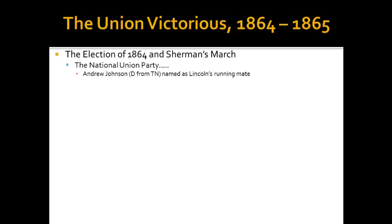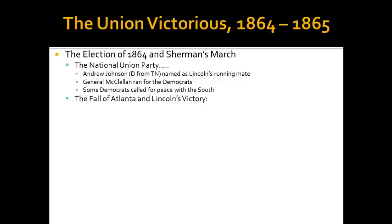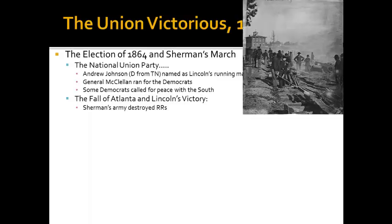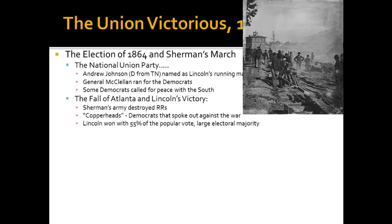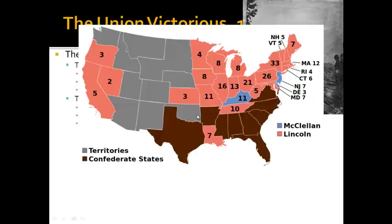The Republicans briefly changed their name to the National Unity Party and nominated Andrew Johnson, a Democrat from Tennessee, as Lincoln's running mate. General McClellan — the man Lincoln had dismissed — ran for president for the Democrats. Some Democrats called for peace with the South and were labeled Copperheads. Sherman encouraged his army to destroy railroad lines in Atlanta and throughout the South, wanting to cut off and destroy the infrastructure. Lincoln won the election with 55% of the popular vote but a landslide electoral majority, with almost all states going to Lincoln except the few won by McClellan.